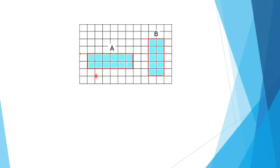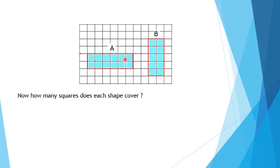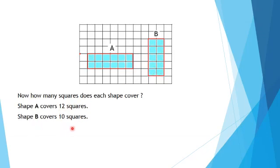Coming back to find out the area of the shapes, let us find the area of shapes A and B by using square strips. Let us start counting the squares that shape A covers: 1, 2, 3, 4, 5, 6, 7, 8, 9, 10, 11, 12. So shape A covers 12 squares. Now we will count the squares that shape B covers: 1, 2, 3, 4, 5, 6, 7, 8, 9, 10. So shape B covers 10 squares. We come to the conclusion that A has a larger area than B.